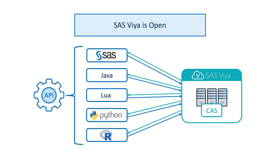You can use SAS, Java, Lua, Python, or R to connect to CAS, so you can manage data and create analytical models using a variety of open source languages.